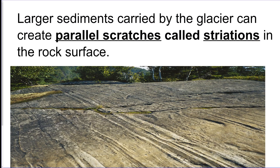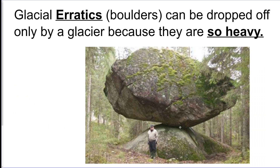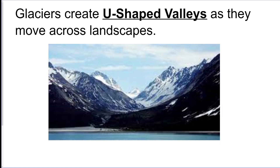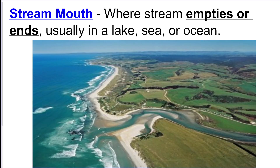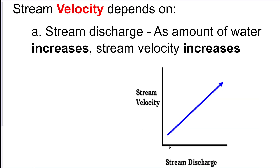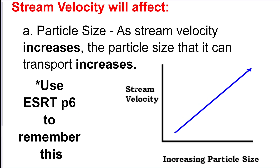Larger sediment carried by a glacier can create parallel scratches called striations on rock surfaces. Glacial erratics are giant boulders dropped by glaciers because they're too heavy to carry further. Glaciers make U-shaped valleys — rivers make V-shaped, glaciers make U-shaped. Stream discharge is the volume of water moving down a stream. The mouth is where it empties out. More water in the river means faster flow, and faster flow means the river can carry larger particle sizes.